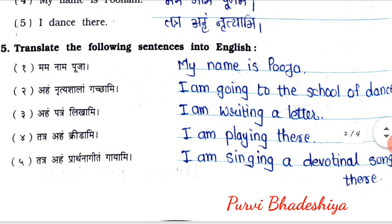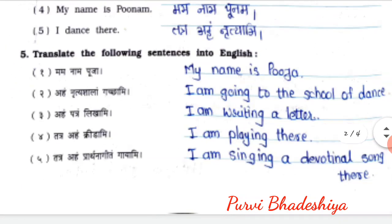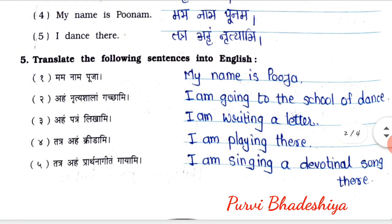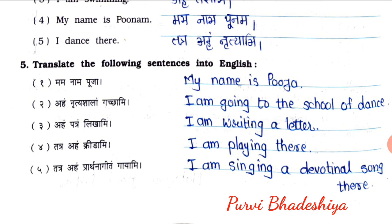Exercise number five: translate the following sentences into English. First: Mamanama Pooja — My name is Pooja. Second: Aham Nrutyashalam Gachami — I am going to the school of dance. Third: Aham Patram Likhami — I am writing a letter. Fourth: Tatra Aham Tridami — I am playing there. Fifth: Tatra Aham Pratnagitam Gayami — I am singing a devotional song there.